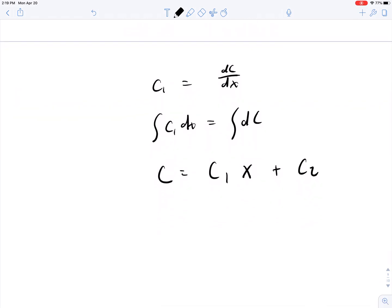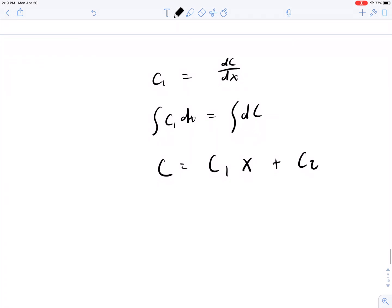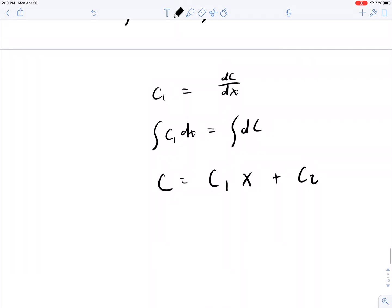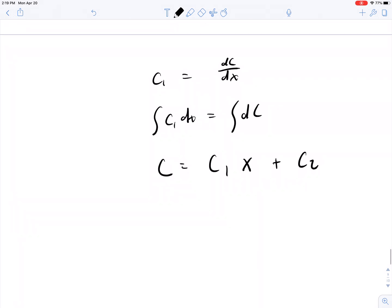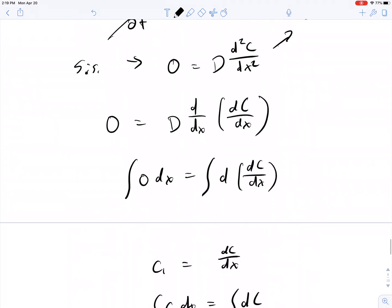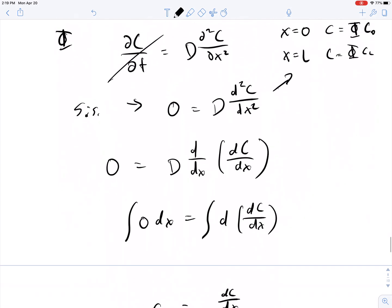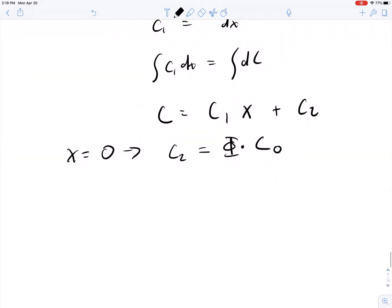And the way that you solve for those is by substituting in the boundary conditions. So at x equals 0, we first apply this, gives us C₂ equals phi times C, what would we call it even here, C₀. That's the concentration on the outside. So then our new equation is going to be C₁ times x plus phi times C₀.